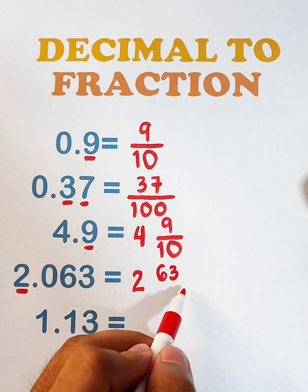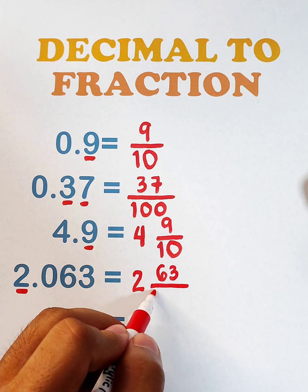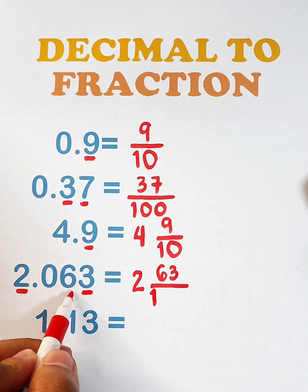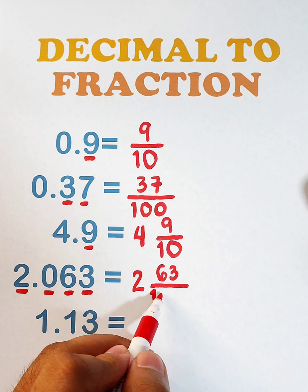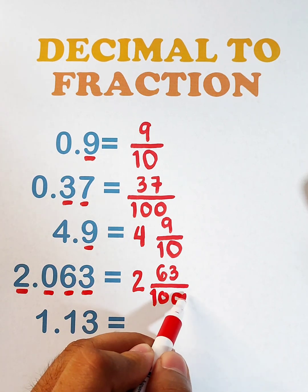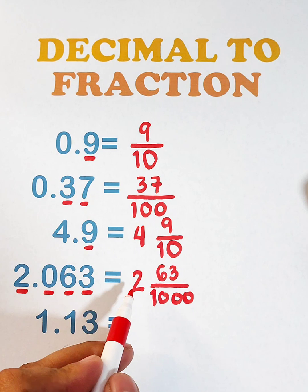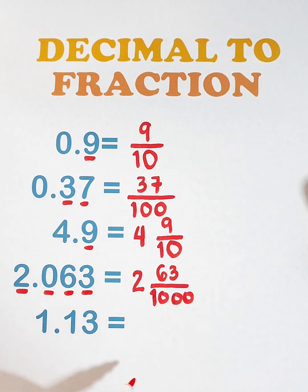Put 1 here, and count the number of decimal places, 1, 2, 3. So we need to write here, 3 zeros. And as you can see, the equivalent fraction of this decimal is 2 and 63 over 1,000.